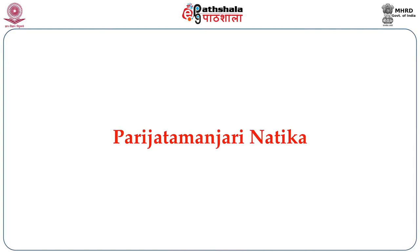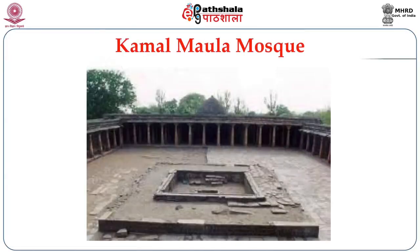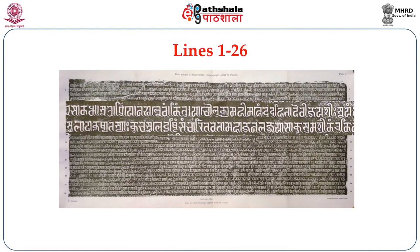On the basis of acts three and four the story of the play can be reconstructed. This is in the form of a prashasti of the Chahamana king Vigraha Raj Deva, also mentioned as Shakambari Ishwar and ruler of the Shakambari Vishaya. The third drama, the Parijat Manjari Natika, has been found from the Kamal Maula mosque at Dhar. It is very interesting to note that all the plays have been discovered from mosques — probably all these mosques were temples turned into mosques.